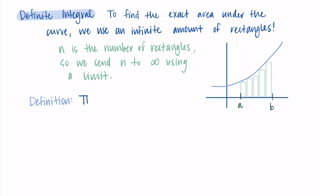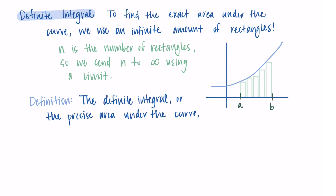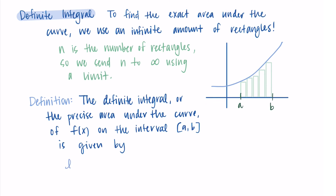For the formal definition of a definite integral, we say that the definite integral — which is the precise area under the curve of a function f of x — on a specific interval from a to b is given by the following: we take the limit as n approaches infinity of the Riemann sum, which is the sum from i equals 1 to n of f of x sub i times delta x. Once we send n to infinity, it doesn't matter if we take the left or the right or the midpoint — they all effectively become the same thing.